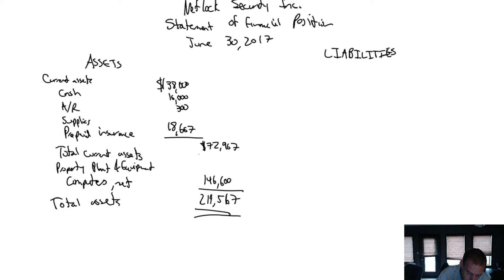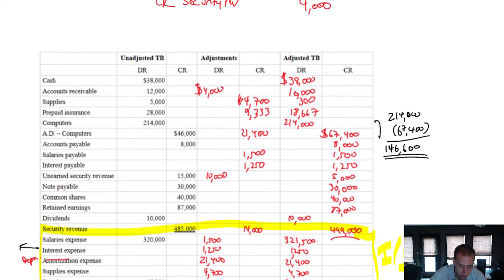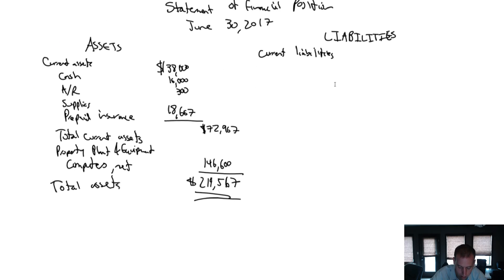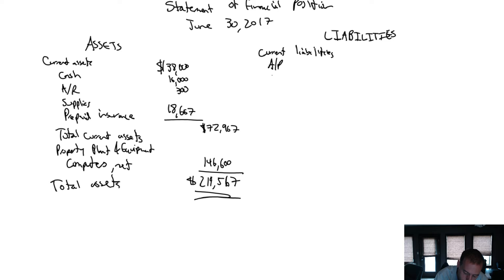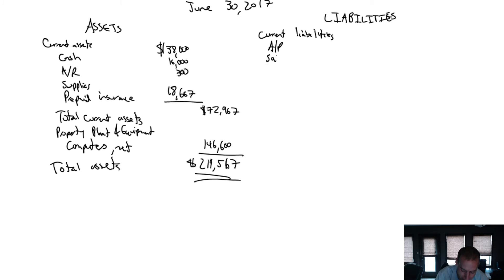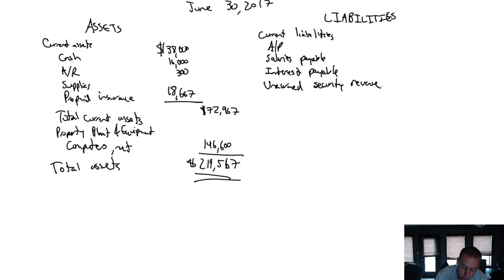Dollar sign at the top of each column and at the bottom. On to liabilities — I'll have current liabilities and I expect some long-term liabilities as well. Under current liabilities I've got — going down the list — accounts payable, salaries payable, interest payable, and unearned security revenue.